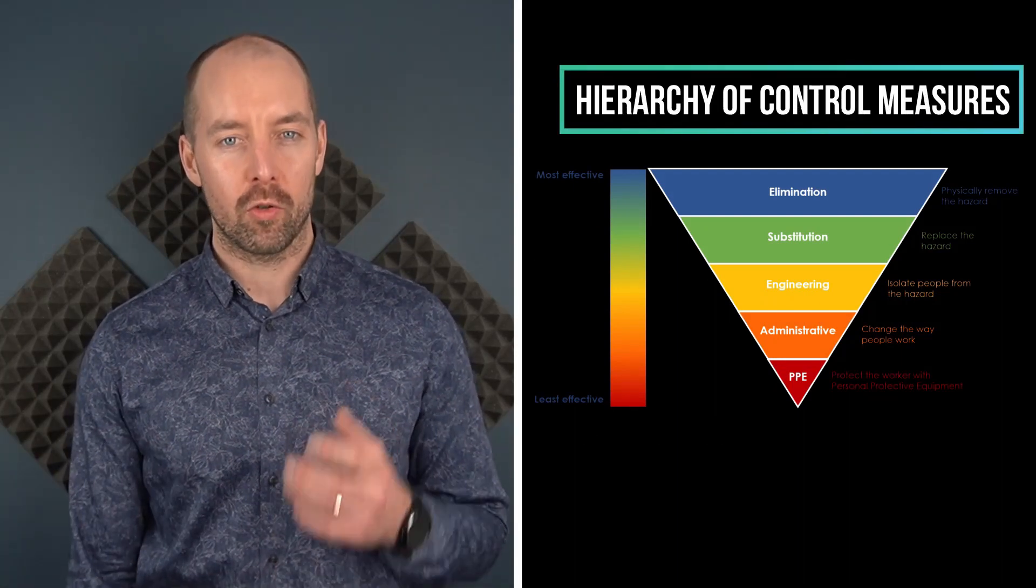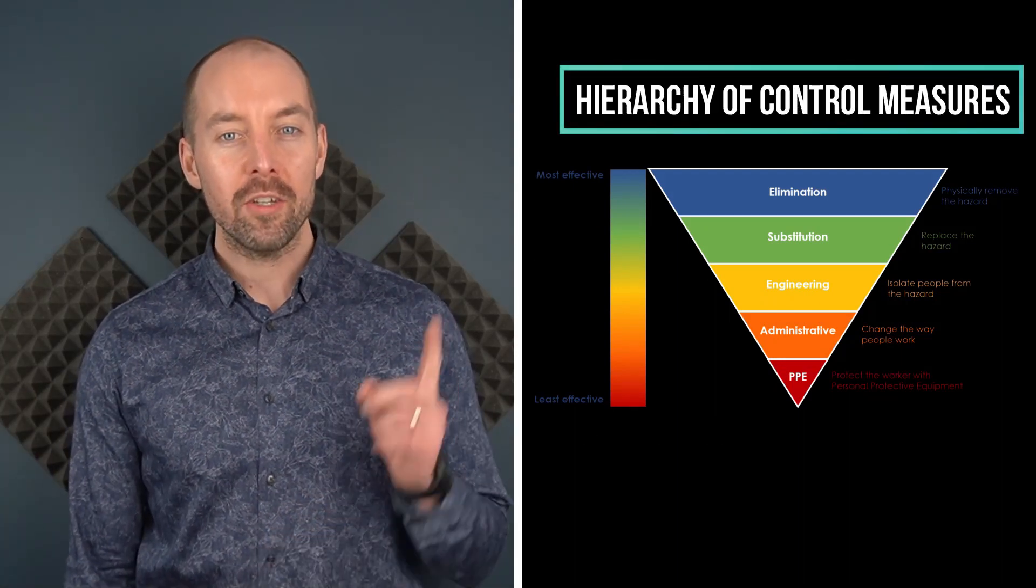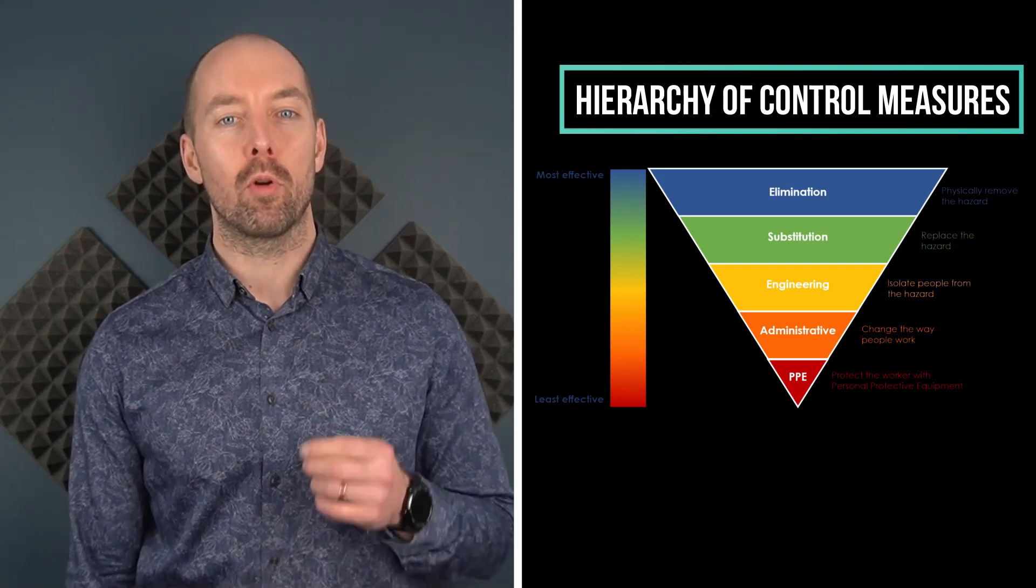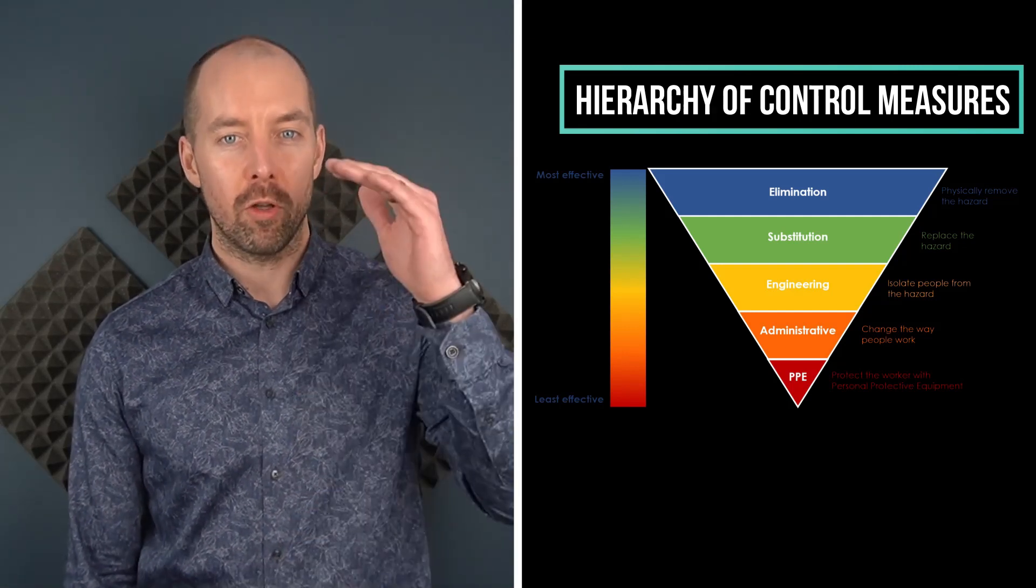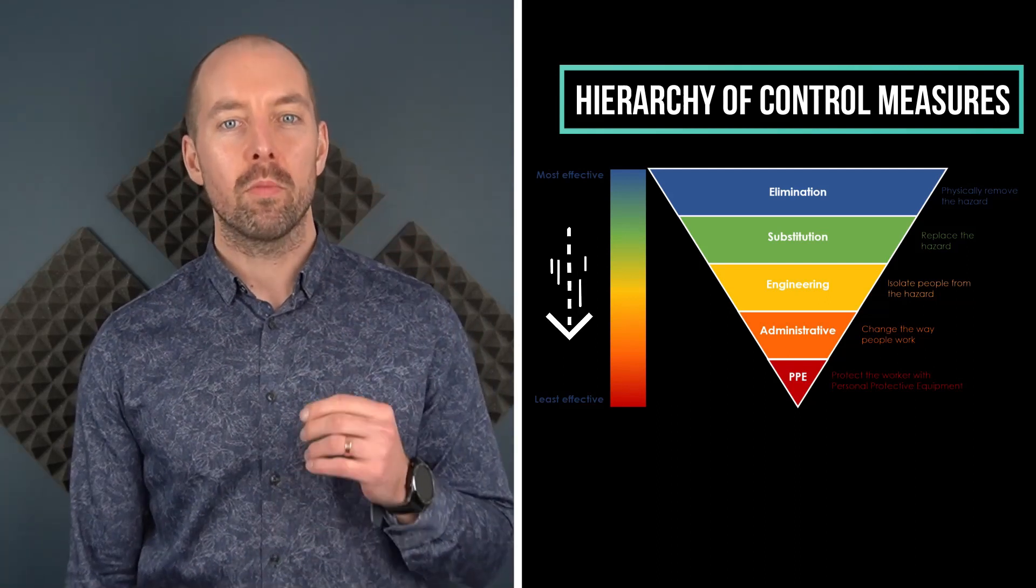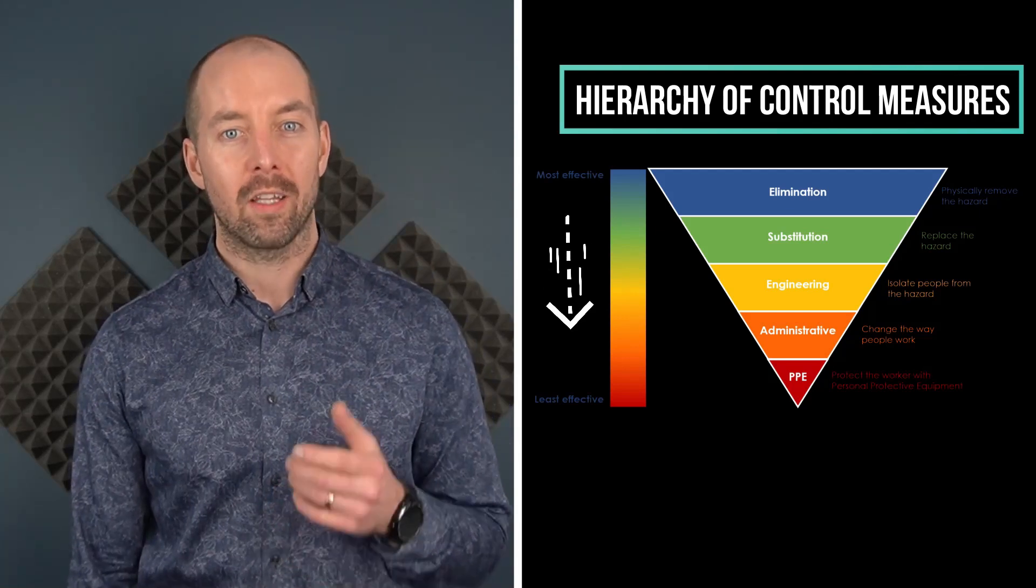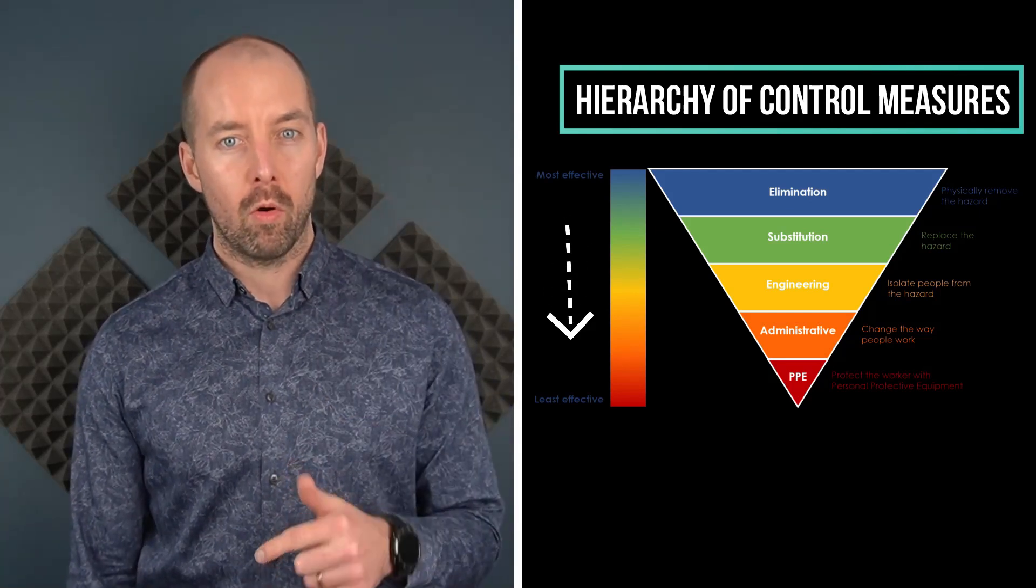What is the hierarchy of control measures? As you can see on screen, the hierarchy of control measures is a simple process model that helps us go through the decision-making process from top to bottom, looking at the most effective control measure options at the top, right down to the bottom where we have the least effective options.